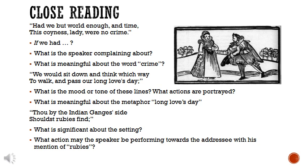'Thou by the Indian Ganges side should rubies find.' What's significant about locating her at the Indian Ganges? If you are in the West, in England, you might find it exotic, certainly distant, alien. It's associated here with rubies — wealth, beauty, riches. Perhaps he's flattering her, appealing to her vanity by offering these gifts, saying 'I know you love beautiful things, so you could find rubies by the Indian Ganges.' It's significant that she's so far away — and he's saying things would be fine, it wouldn't be a big deal for us to be apart, if we had world enough and time.